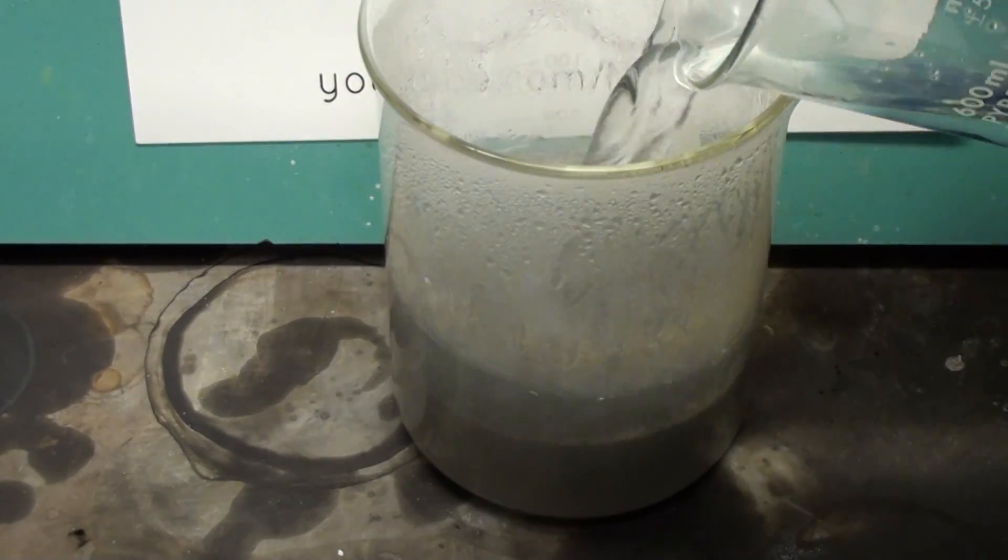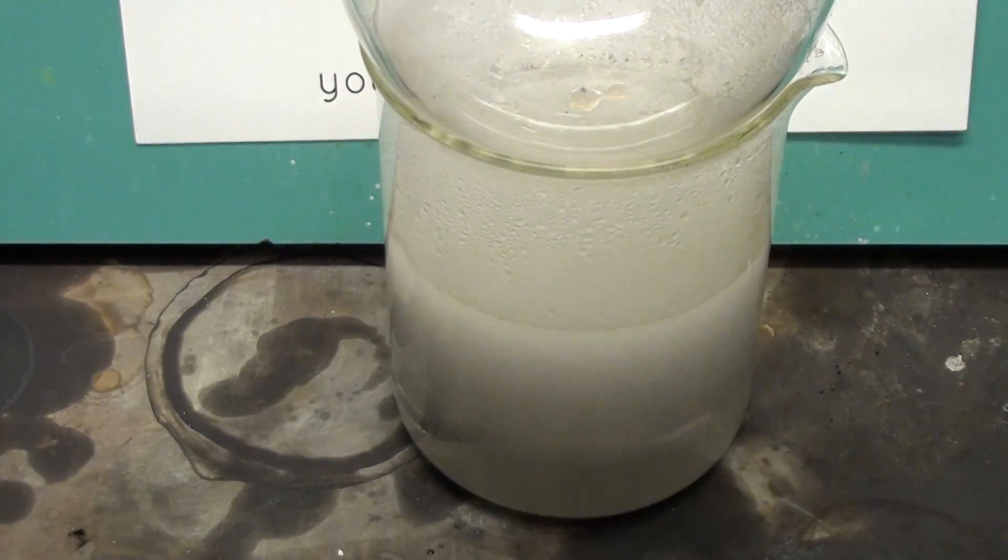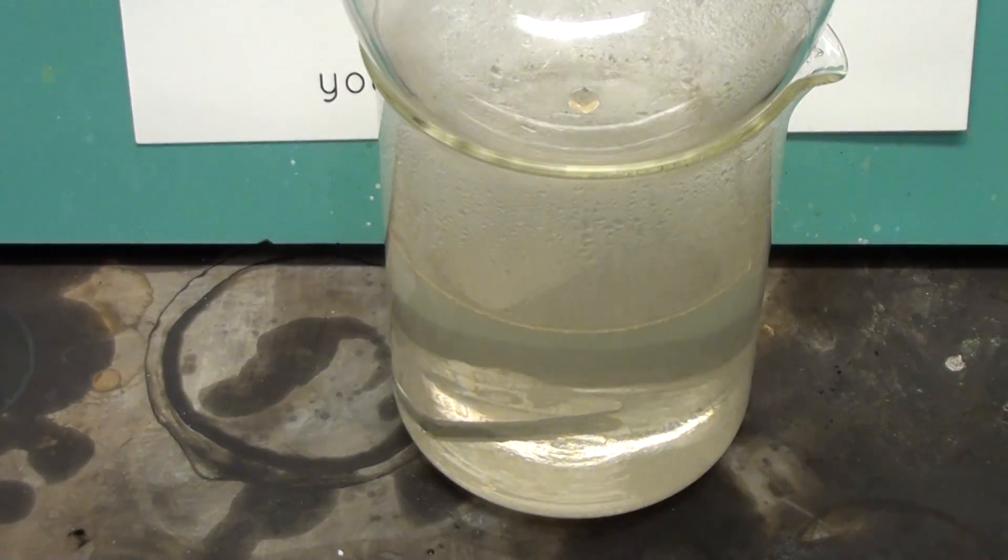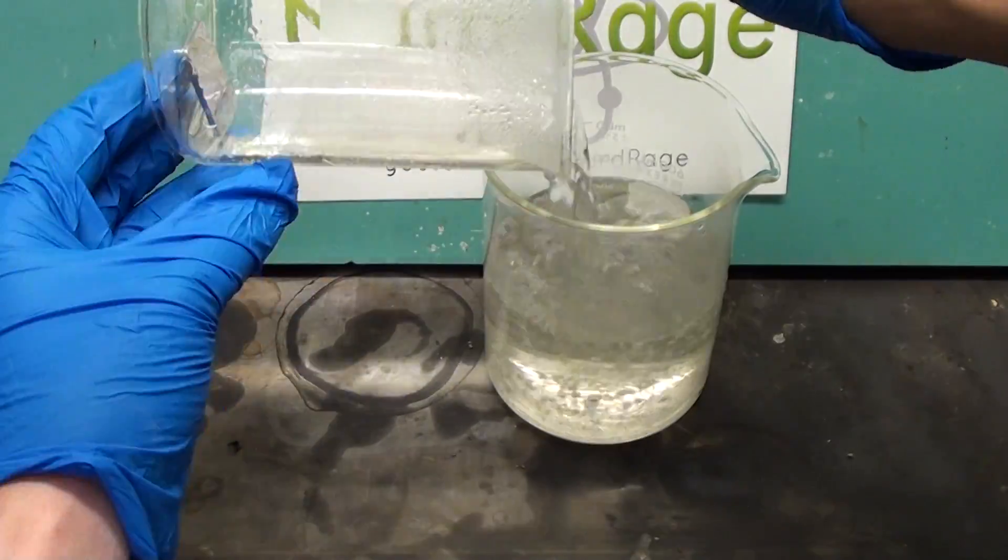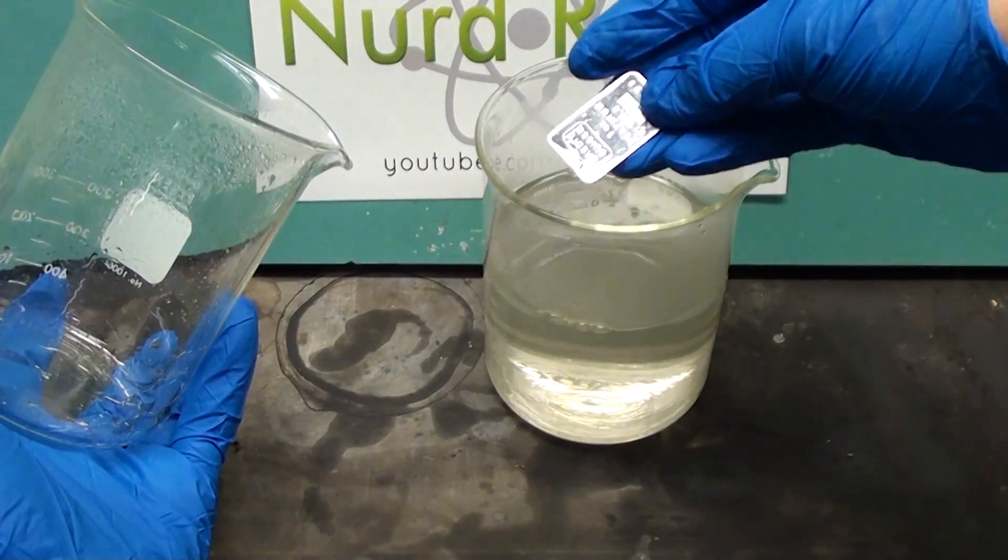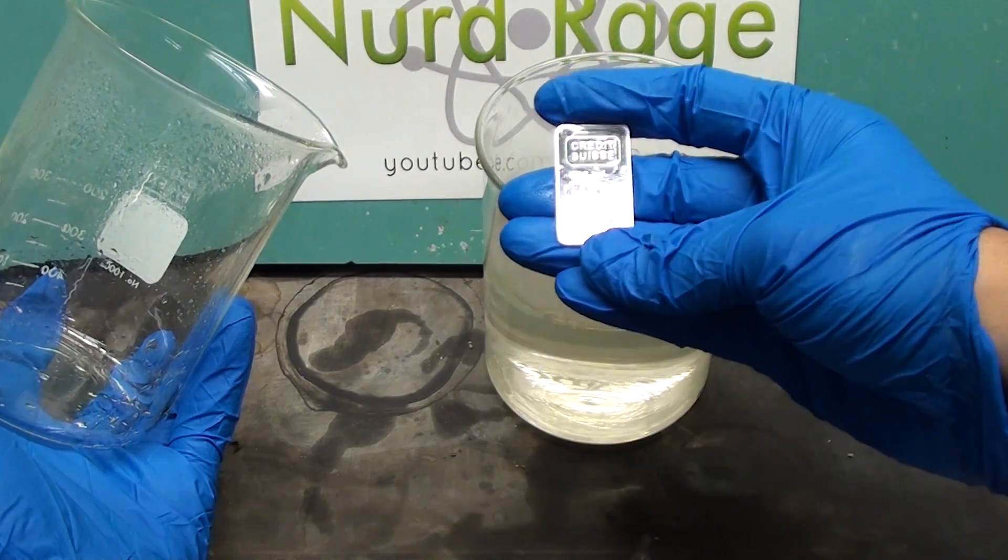I'm going to add some water to completely dissolve it. And here's the platinum bar. Let me get it out of there. The hydrochloric acid completely destroyed the aluminum, but the platinum bar is perfectly fine.